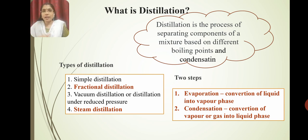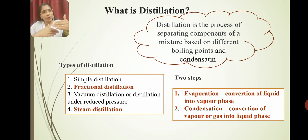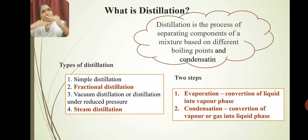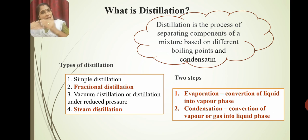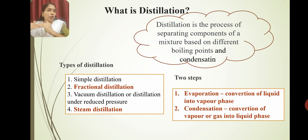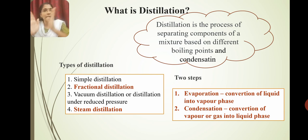The second step is condensation. How does condensation occur? The evaporated vapor phase converts back to liquid phase — that is called condensation. Evaporation and condensation together — these two processes make up distillation.